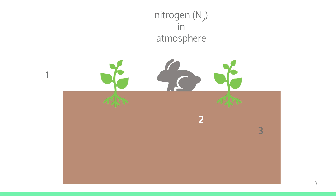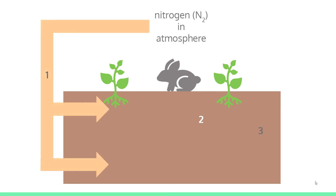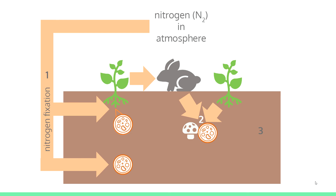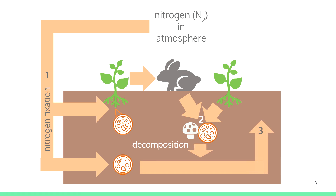Number one shows the nitrogen in the atmosphere entering the living world — this is called nitrogen fixation, done by bacteria, making nitrogen accessible to other living organisms. The plant is eaten by the rabbit, carrying the nitrogen into the rabbit. Number two shows the rabbit and plant waste being broken down by fungi and bacteria — this is called decomposition. Number three shows the nitrogen getting ready to leave the living world and return to the atmosphere — this is called denitrification, which is completed by bacteria.